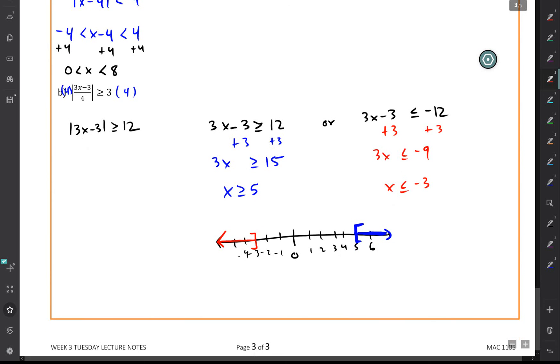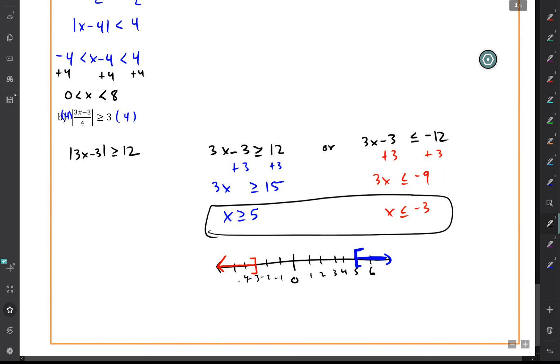And again, use a square bracket to note the fact you're including the endpoint in there. So this is our solution, and this is the solution graph on the number line.